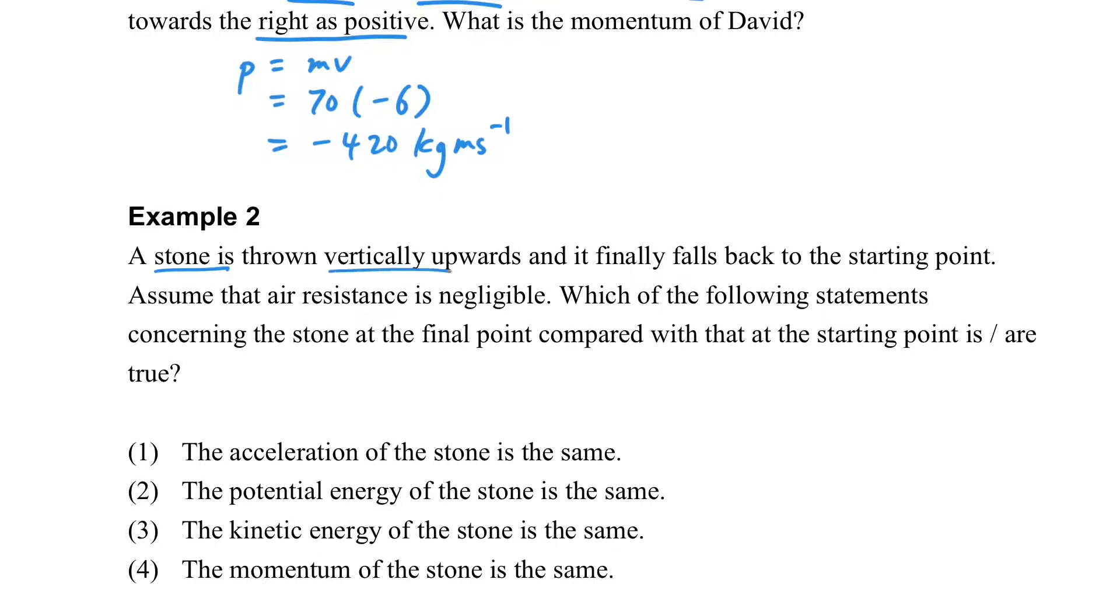Then, if a stone is thrown vertically upward and falls back to its starting position, assuming air resistance is negligible, which of the following statements is correct? The stone will go up and down with the same speed at the same level. Do they have the same acceleration? Yes, because both experience the acceleration due to gravity. How about the potential energy? It should be the same because of the same height. And KE is also the same because of the same speed.